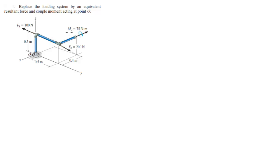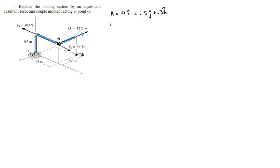First let's find the resultant force, so let's find all the points involved. We have this point here and this point here — let's call this point A and this point B. So A sits at 0i + 0.5j + 0.3k, and B sits at -0.4i + 0.5j + 0k.